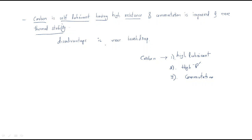The disadvantage of carbon is more voltage drop. Whenever carbon is used, since it has high resistance, the voltage drop will be high. This is the main disadvantage of carbon brushes.